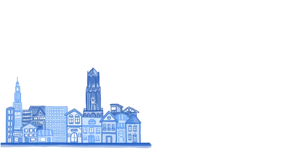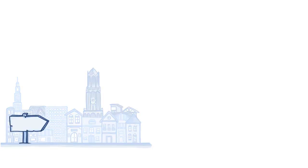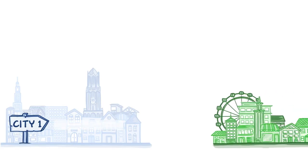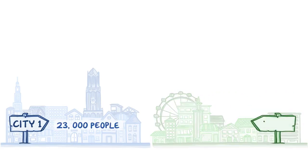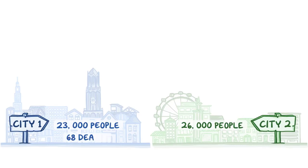For example, let's say we want to compare the crude mortality rates in two cities: City 1, which has a population of 23,000 people, and City 2, which has a population of 26,000 people. In one year, there were 68 deaths in City 1 and 122 deaths in City 2.